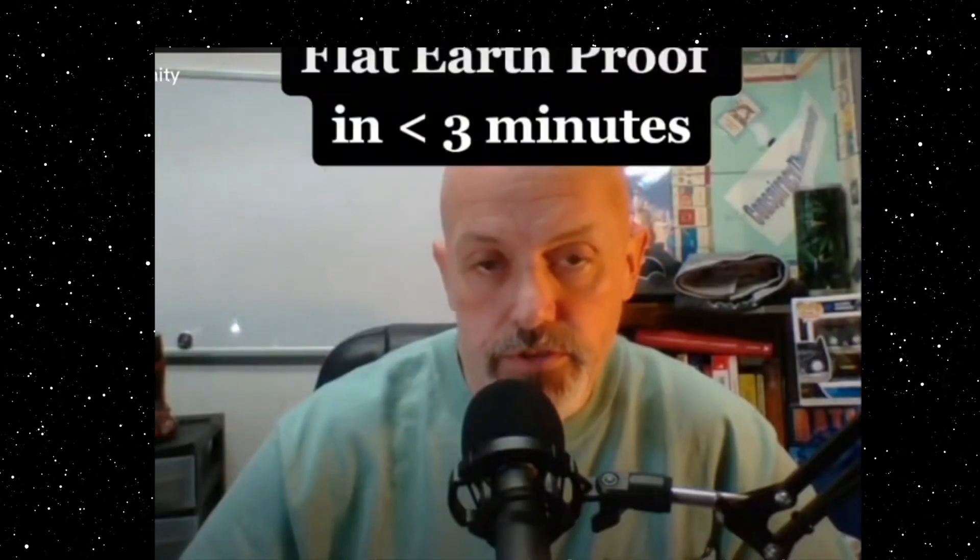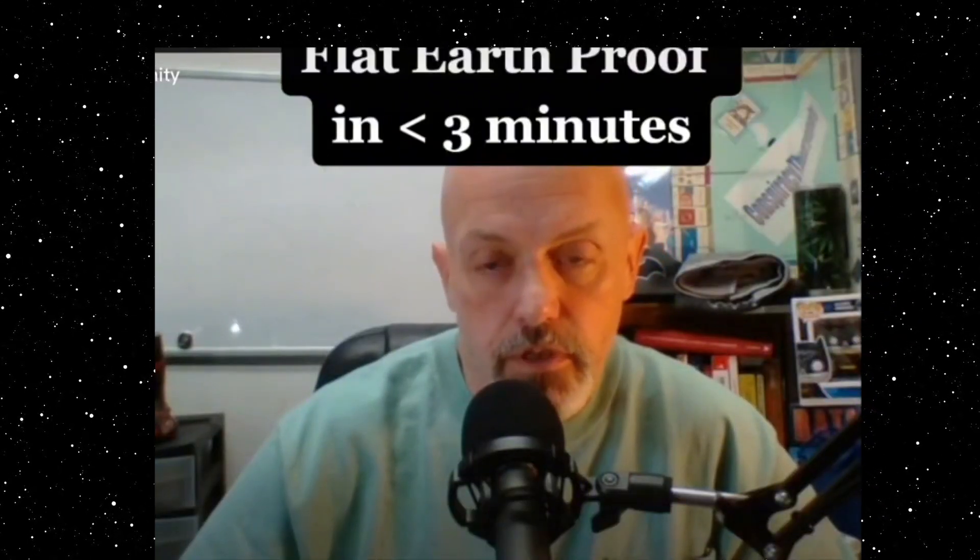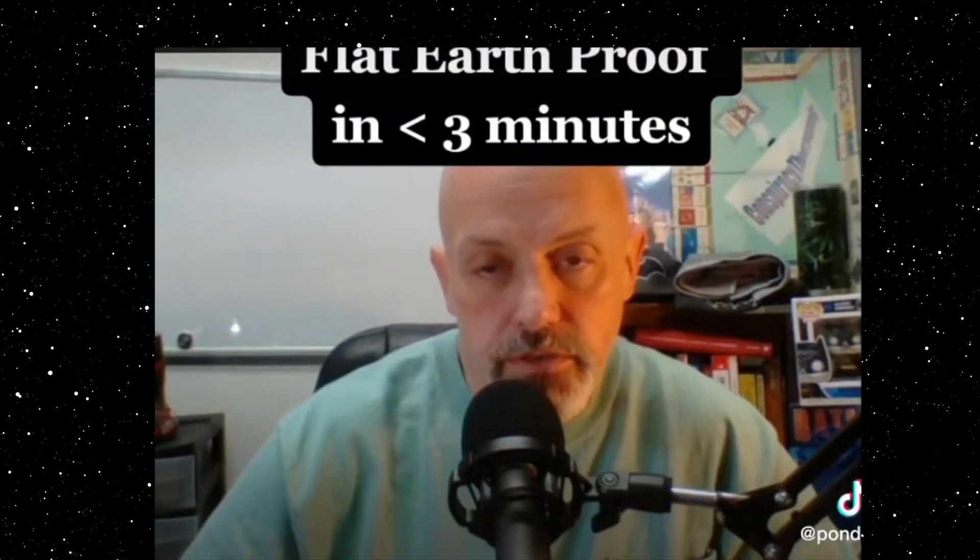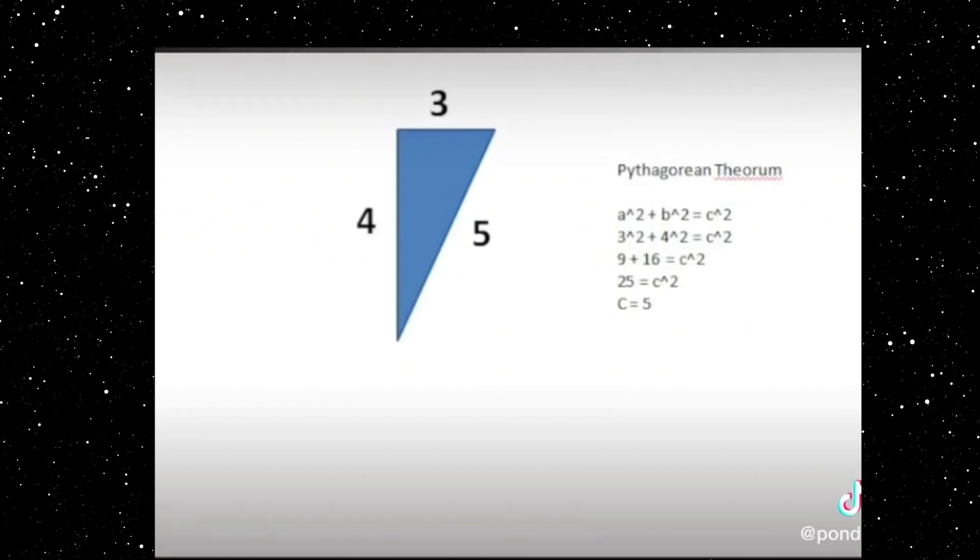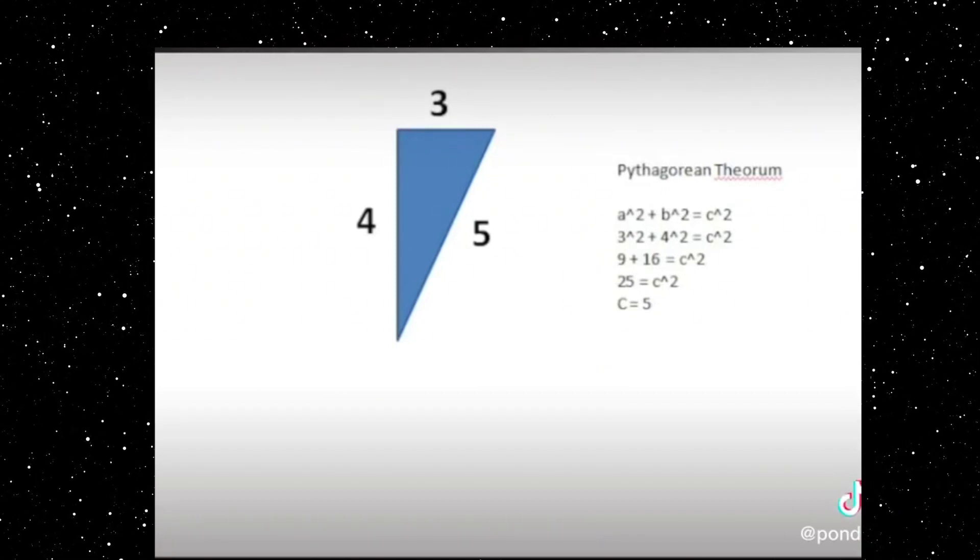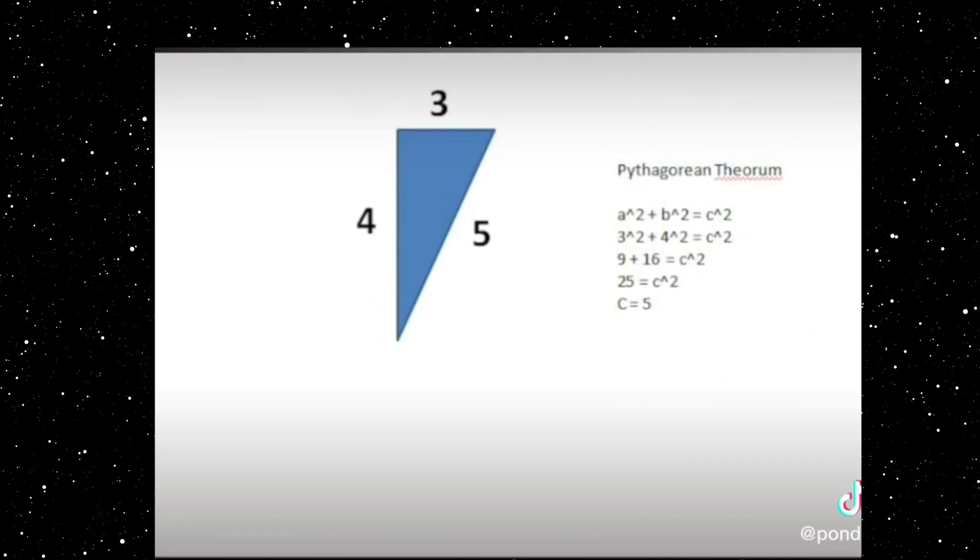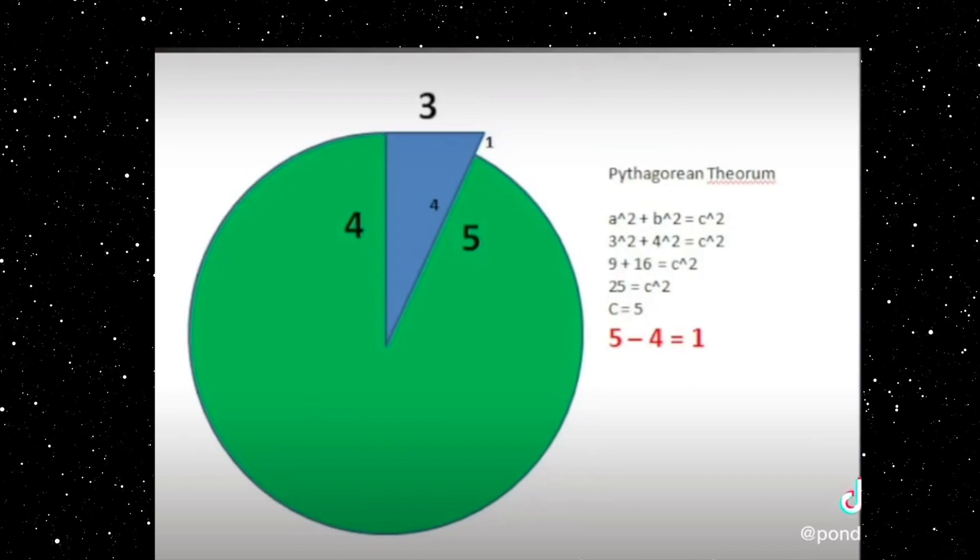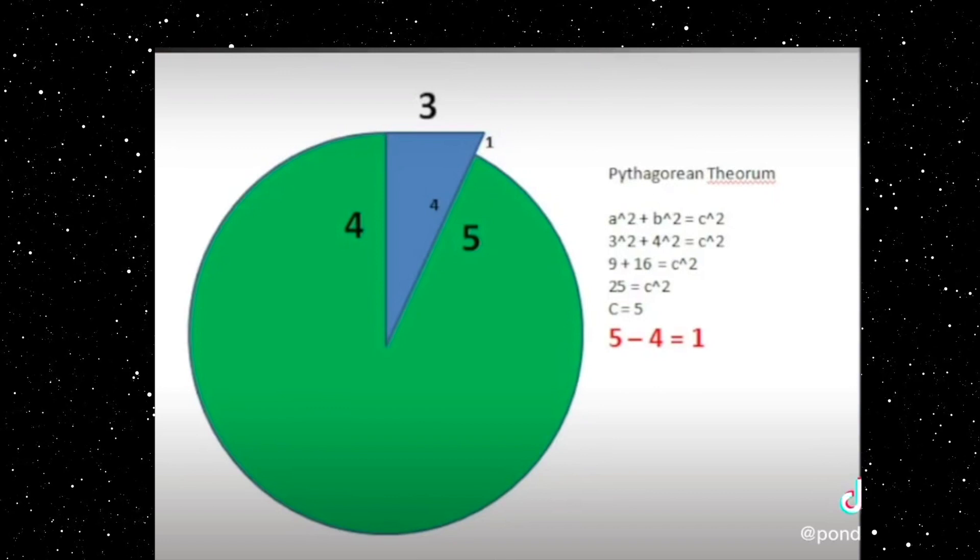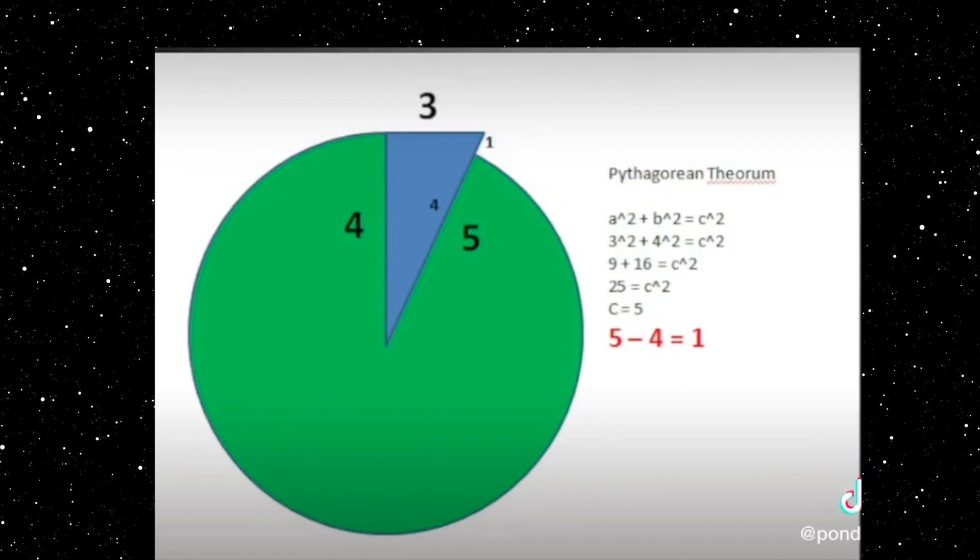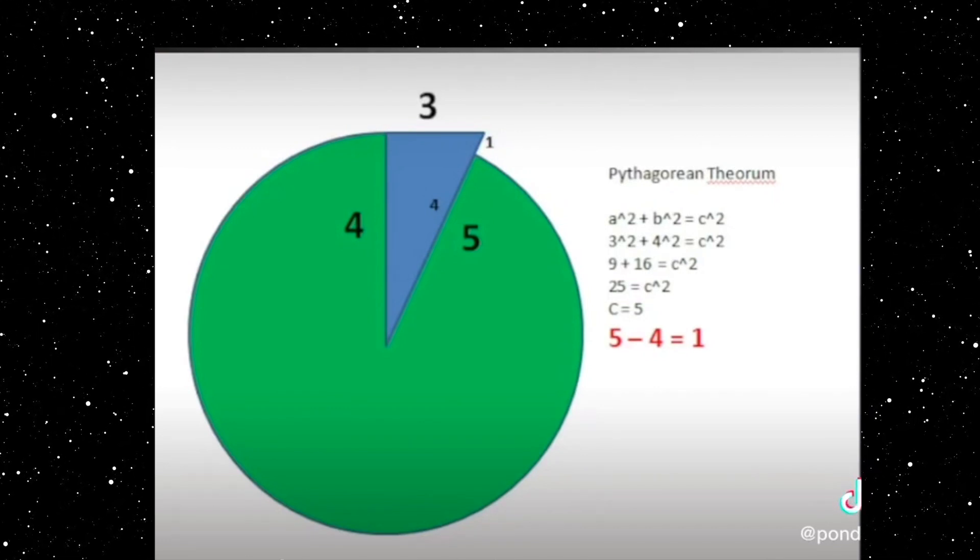Flat earth using the Pythagorean theorem - somebody please show me how I'm wrong. Everybody can agree the Pythagorean theorem is a squared plus b squared equals c squared, the three-four-five triangle. But if we overlay a circle on that three-four-five triangle with the radius of four, the hypotenuse is five, the radius of four from the hypotenuse of five.